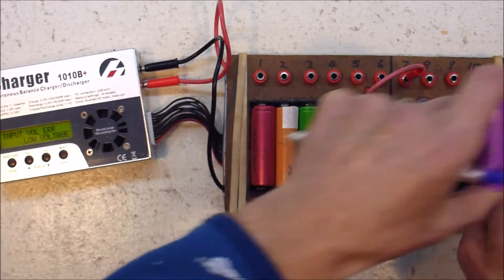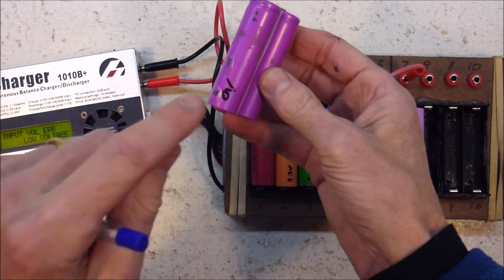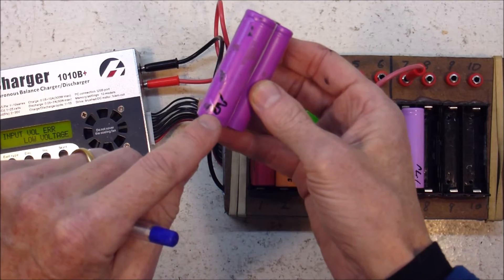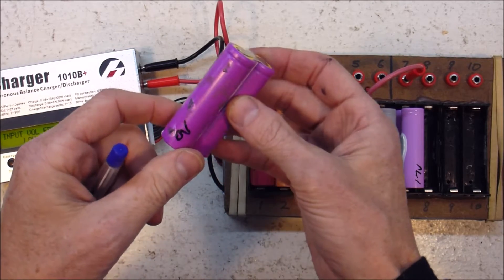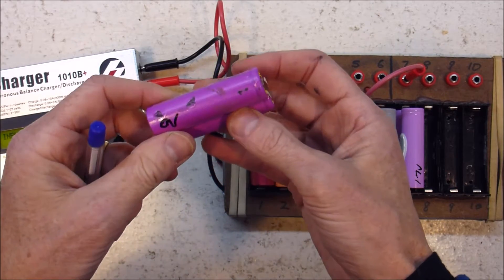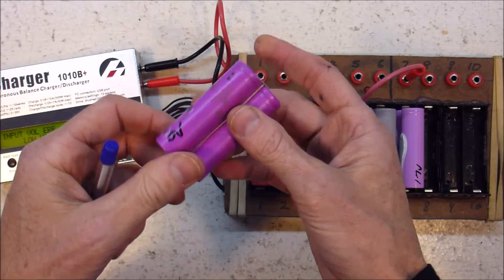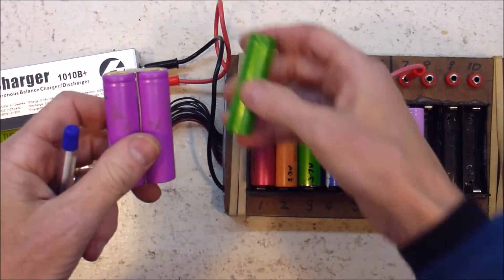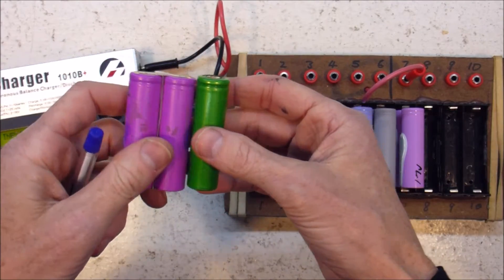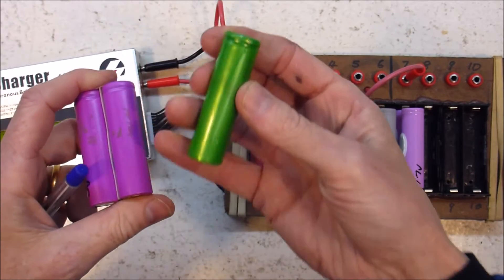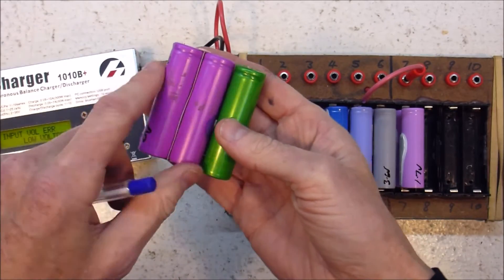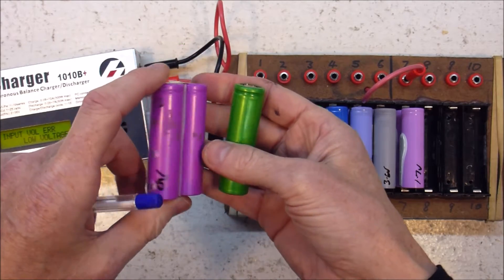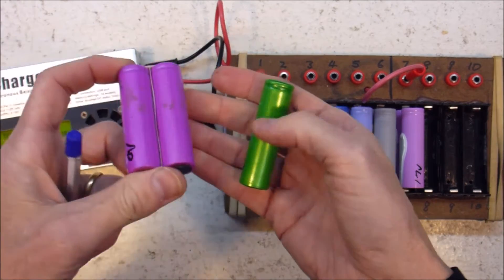Then this one here initially read as zero volts. I tried charging it, and it wouldn't charge in my 20-way charger. So then I tried the trick where you connect that in parallel with an unknown good cell, and the theory is that the good cell will charge the bad ones, and that didn't do anything.